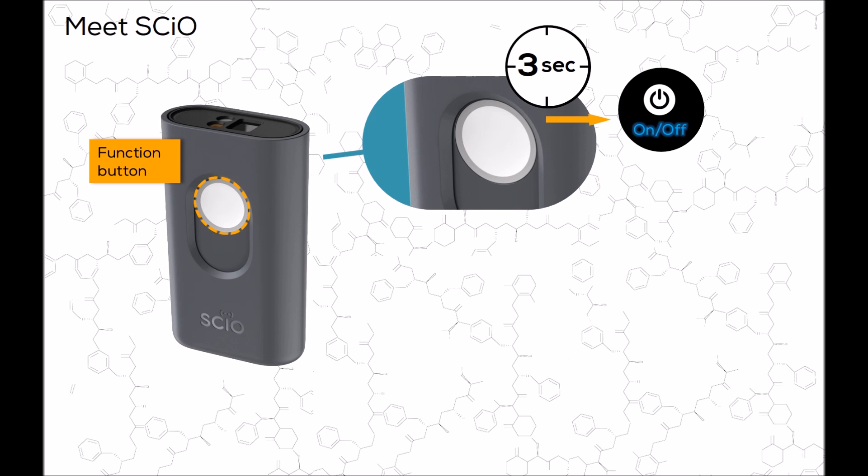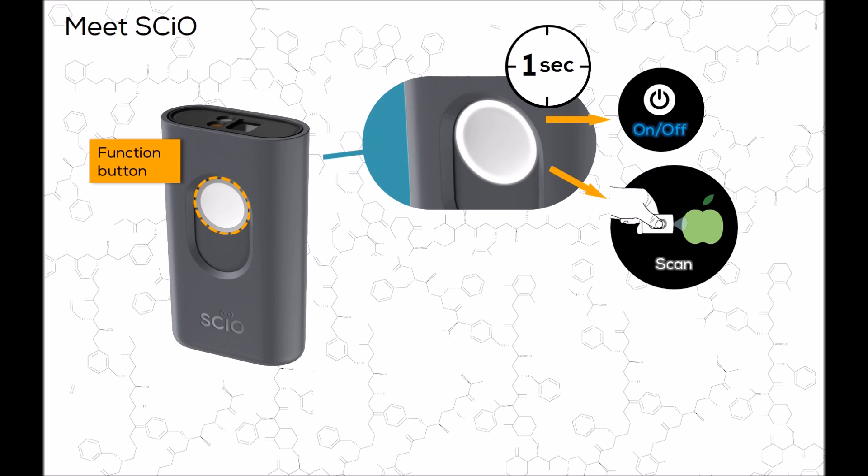To scan or calibrate when prompted by the app, press the function button for one second, or tap scan or calibrate in the app. SCiO ships with a six-minute automatic shutoff after non-use. When you turn SCiO back on after auto shutoff, it will automatically re-sync with your phone.